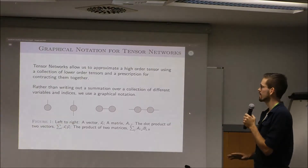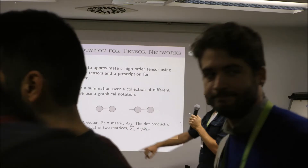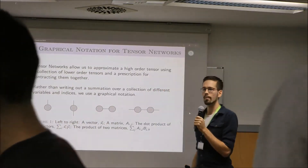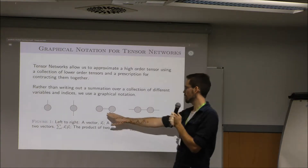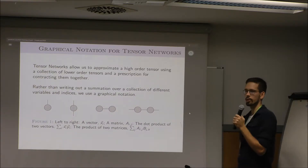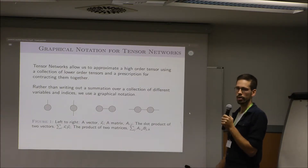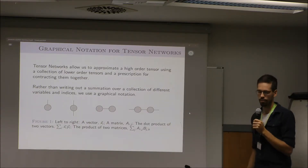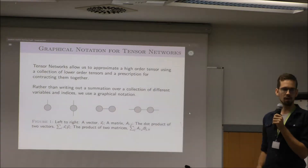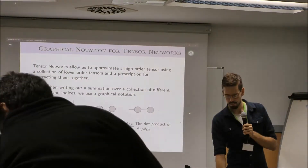Rather than write out equations — we're not supposed to have too many equations on our slides — we have this nice graphical notation instead. The way it works is that we have lots of different blobs, and these blobs represent tensors. The number of legs coming off of those shapes tells you how many indices that tensor has. When tensors share a leg, that corresponds to contracting over a shared index. These are all familiar operations — vectors, matrices, dot products — and we could take all of these and turn them back into Einstein summation equations, but this is a much easier way to work with them in practice.